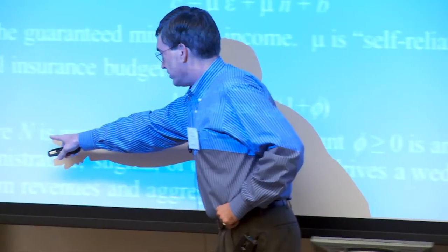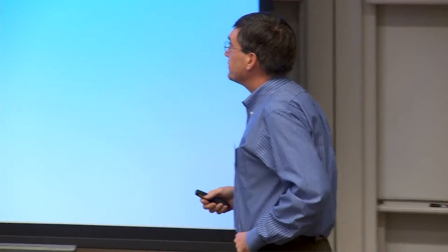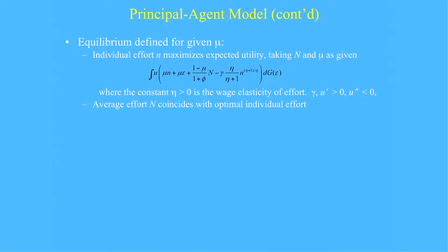The key public economics is people hold the average effort constant when they make their decisions, but of course everybody gets counted in the average. Here's the individual's problem. He knows what the tax rate is, that's a policy parameter. He knows how much everyone else is going to work. And he chooses his own effort level, recognizing that when he puts more effort, he has a cost of exerting that effort, but he'll have more income and he keeps some of that.